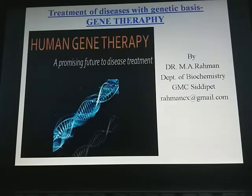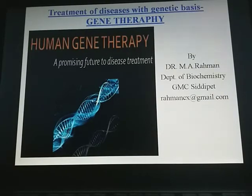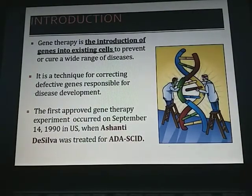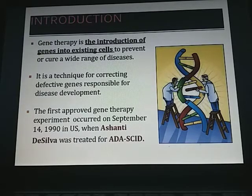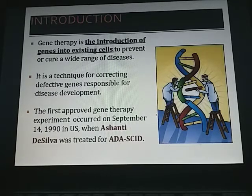Today we are going to discuss the treatment of diseases with genetic basis — gene therapy and transgenic animals. Gene therapy is the introduction of normal genes into existing defective cells to prevent or cure a wide range of diseases. It is a technique for correcting defective genes responsible for disease development.